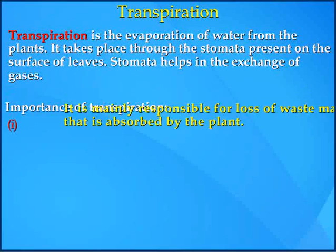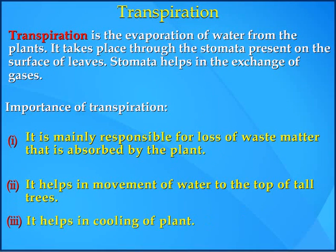Transpiration. Transpiration is the evaporation of water from plants. It takes place through the stomata present on the surface of leaves. Stomata help in the exchange of gases. Importance of transpiration: 1. It is mainly responsible for loss of waste matter that is absorbed by the plants. 2. It helps in movement of water to the top of tall trees. 3. It helps in cooling of the plant.